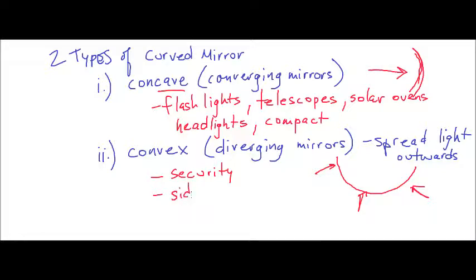Side-view mirrors in cars are also convex mirrors. We're able to see a lot more of the objects around us because they spread light outwards. Notice the warning that comes with these mirrors: objects are a lot closer than they appear, because convex mirrors spread out light and show a wider view.